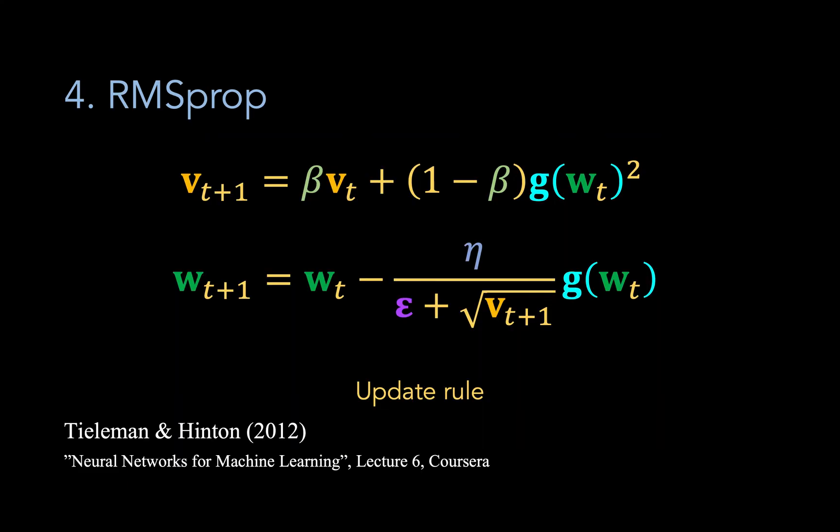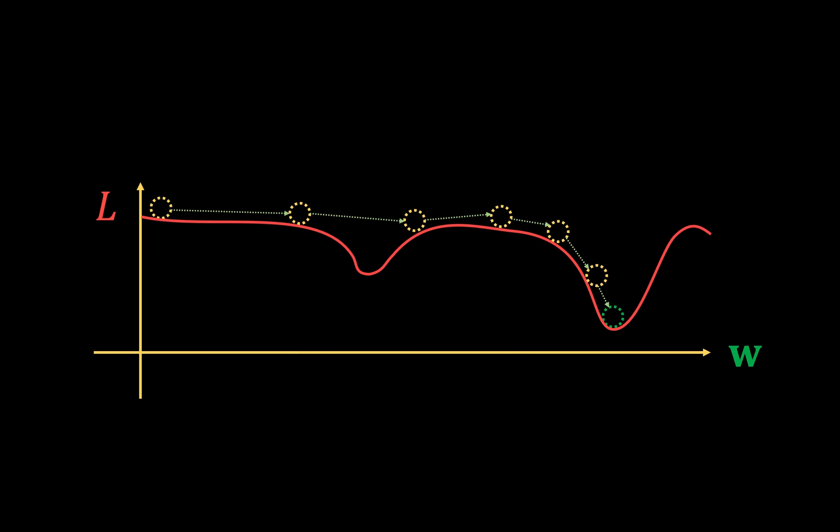Now, RMSprop, or root mean square propagation, attempts to circumvent this issue by allowing the effective learning rate to both decrease and increase. Like with AdaGrad, the algorithm keeps some sort of memory of previous gradients. And this time the v term is updated from one step to the next according to a discount parameter beta that controls how much of the previous v term is remembered. Thus, when a large gradient is encountered, v is modified such that the learning rate is scaled down, and when a small gradient is encountered, it is scaled up. Intuitively, this allows us to retain some of the benefits of a decaying learning rate without the risk of suffering a permanently decayed rate. When the surface is relatively flat, w takes a big jump, and when the surface is quite steep, w takes a small jump so as to avoid leaping over a target minimum. However, of course, the model can still find itself stuck in annoying local minima.